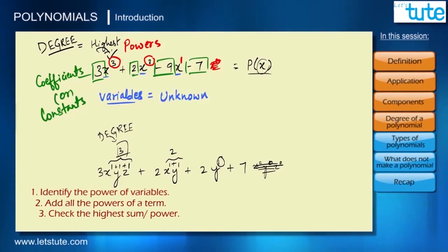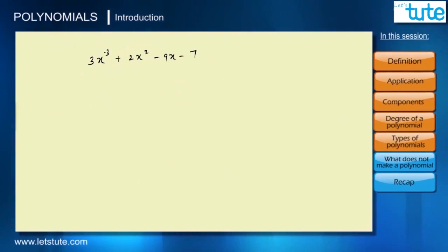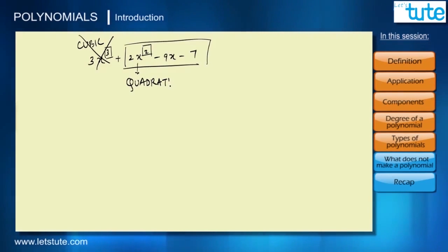Now why are we focusing on this degree so much? Because on the basis of degree, we can classify polynomials into various types. A polynomial with a degree of 3 will be called a cubic polynomial. If we did not have this term and the highest degree was 2, this would be called a quadratic polynomial. If there was only 9x - 7 and the highest power was 1, this would be called a linear polynomial. We call this linear because if we plot it in a graph, we get a straight line.